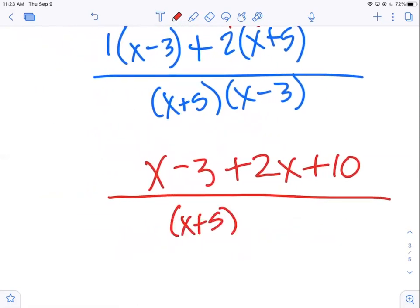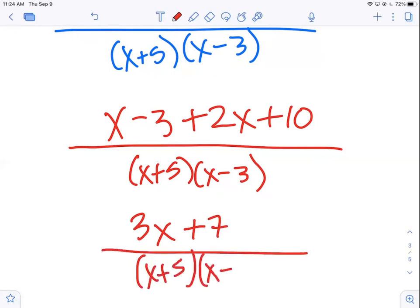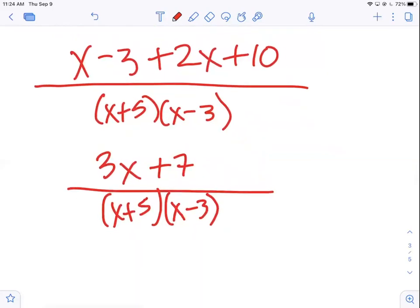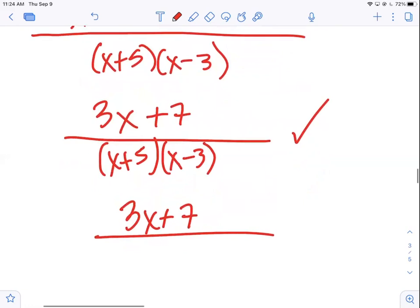The bottom, however, is completely factored. And if we are to simplify a fraction, we can only divide out common factors. So, we don't know if we are going to be able to divide anything out, but in the hopes that we might be able to, leave the bottom factored for now. And let's go ahead and expand the top. So, I just have to rewrite the bottom. And now, we'll collect like terms, 3x plus 7 over x plus 5, x minus 3.